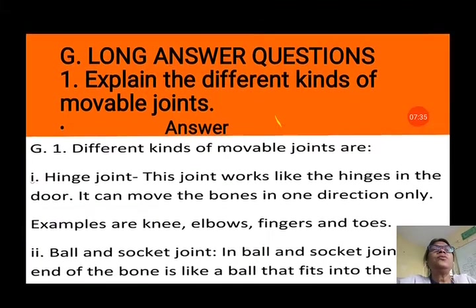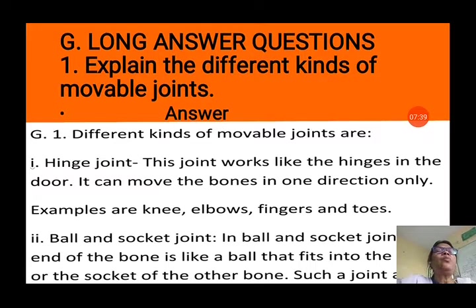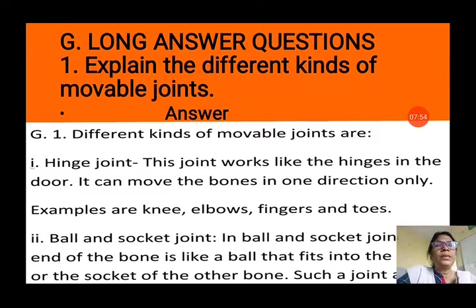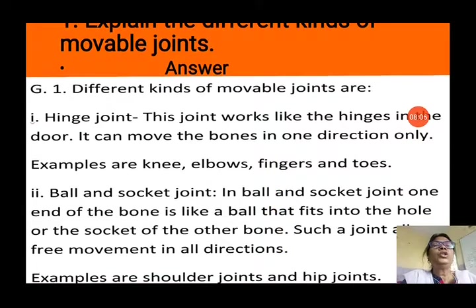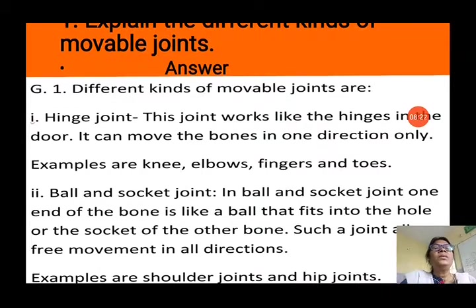Exercise G — Long answer questions. Question 1: Explain the different kinds of movable joints. There are four kinds. First, hinge joint — this joint works like hinges in a door; it can move bones in only one direction. Examples are the knee, elbow, fingers, and toes. Second, ball and socket joint — one end of the bone is like a ball that fits into the socket of the other bone, allowing free movement in all directions. Examples are the shoulder and hip joints.